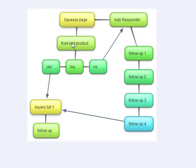All you need is one simple front-end product. When you send people to your squeeze page they can buy it, and if they do, you send them to your buyers list — and this is what you need to focus on. You need to focus on building your buyers list, your customer list. If they buy your product you send them to your buyers list and follow up with those customers over time. If they don't buy your front-end product, you send them to your autoresponder and follow up with those subscribers until they do buy.